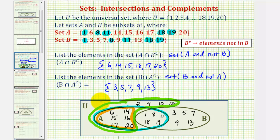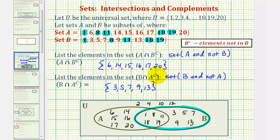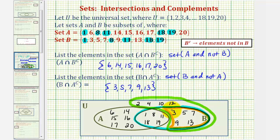Then, looking at the second question again, if we look at this as the intersection of two sets where the first set is set B, and then the set A complement, or the elements not in A, would be these elements as well as the elements in the universal set. So we're looking for the intersection of set B and A complement, meaning the elements that are in both of these two sets, which we already found — those would be these elements here. This would be B intersect A complement, which are the elements that are in set B and also not in A.